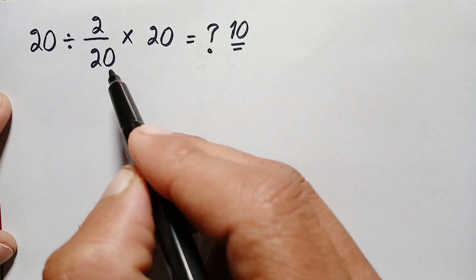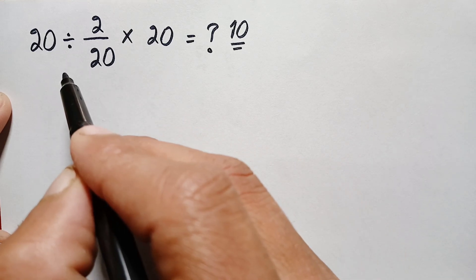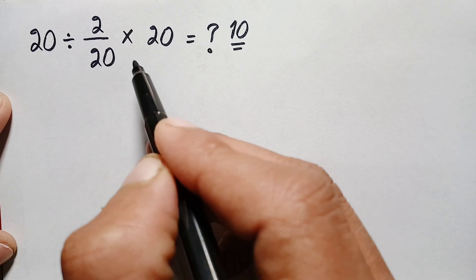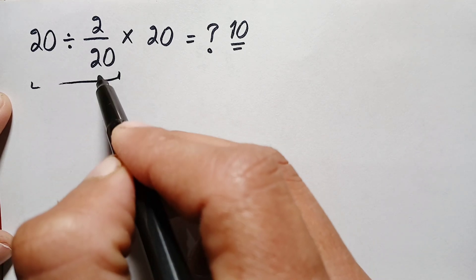Now to get the correct answer here we have to do division or multiplication from left to right. So therefore here we have to do division first before multiplication. So therefore here we will divide this 20 by 2 by 20.